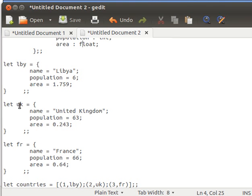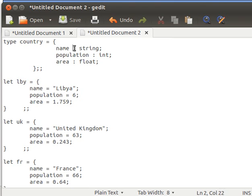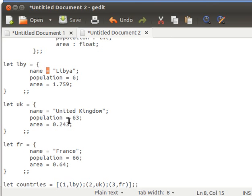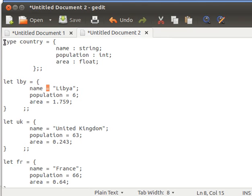For the UK, name is United Kingdom. That's how we assign the values inside the records. Notice for the definition it's colon; for assigning value it's the equal sign. Population 63 million people, area 0.243 million square kilometers. France, name is France, population 66 million, area 0.64 million square kilometers. Let me copy and paste that into my top level and move on from there.